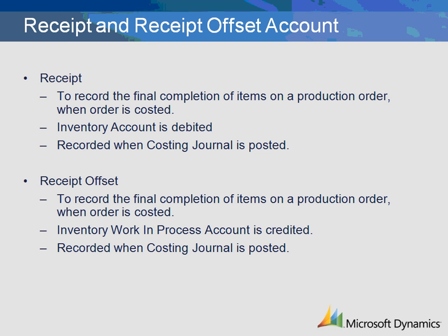The Receipt Transaction is the setup related to the recording of completed and costed production orders. The transaction is created when the final calculation of the production order is completed through a costing journal and is posted to the production order. The ledger account for this transaction is the inventory account associated with the end item being placed into inventory from the production order and is debited at the time of journal posting.